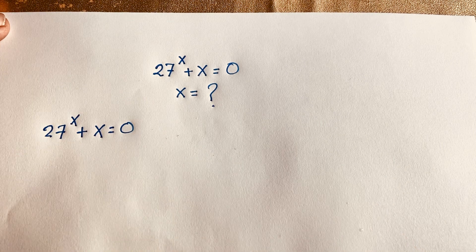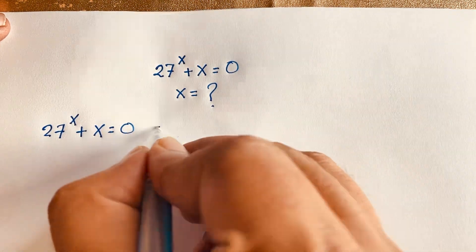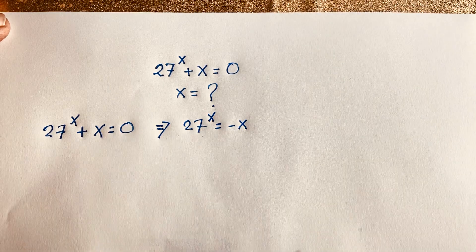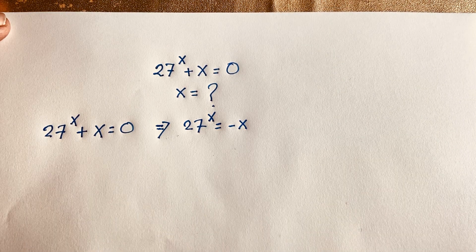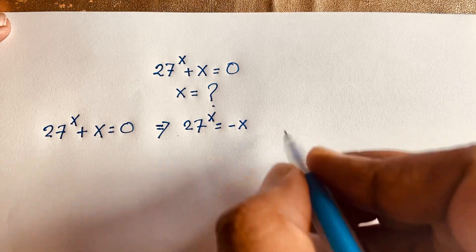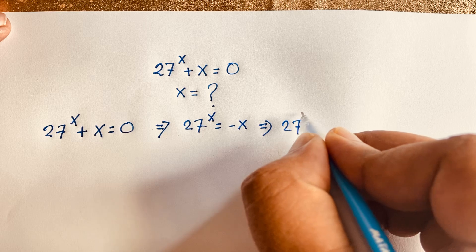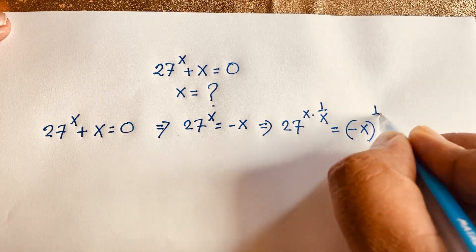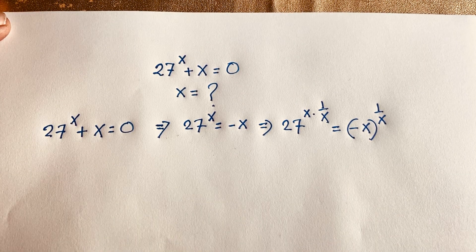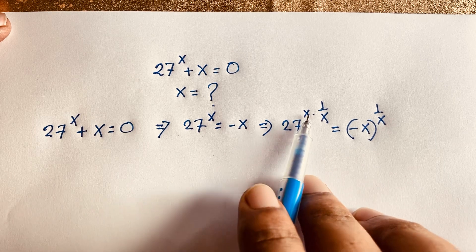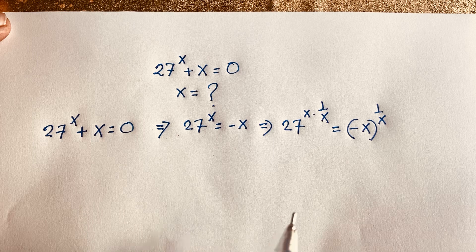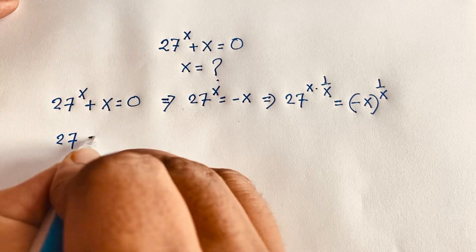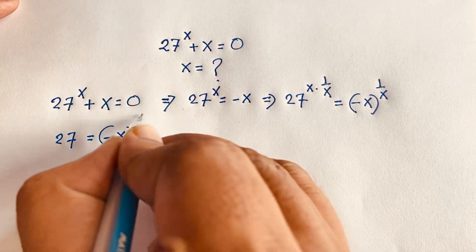First, I can rewrite this expression: 27^x is equal to minus x. Then I use both sides exponent — here is my x. I use 1 over x as the exponent on both sides. Then x and x cancel, and we find: 27^1 is equal to minus x to the power 1 over x.